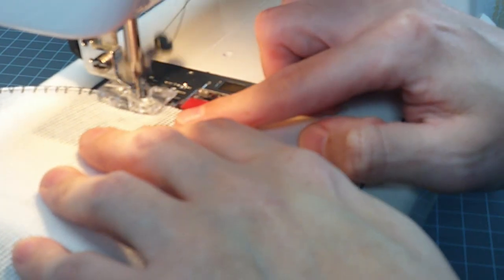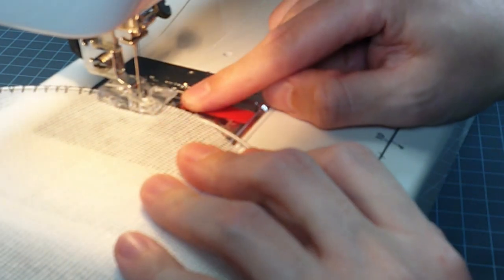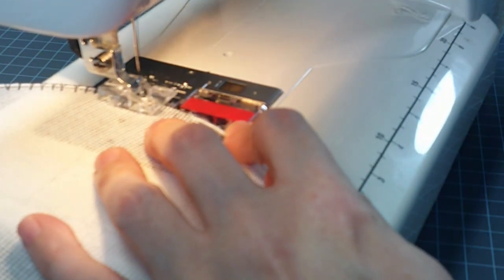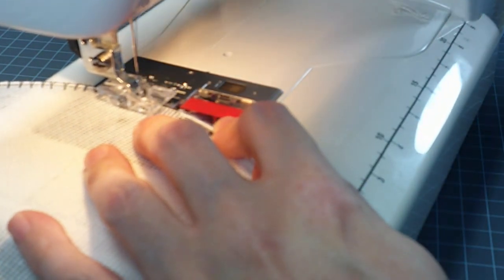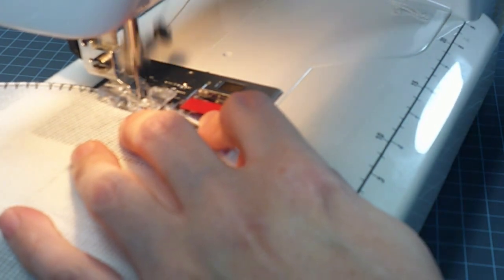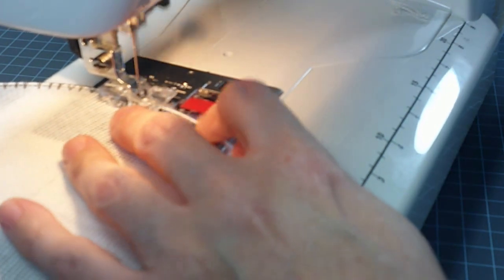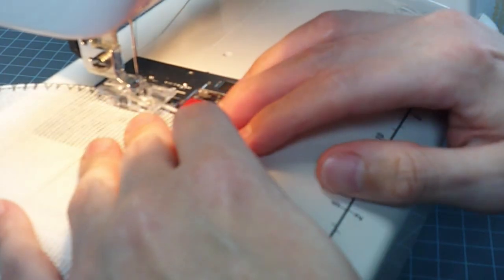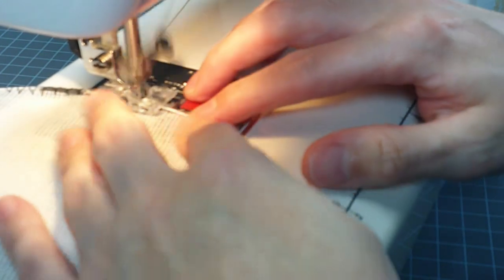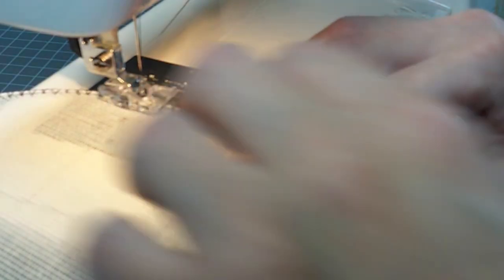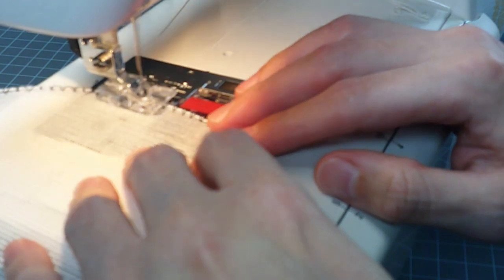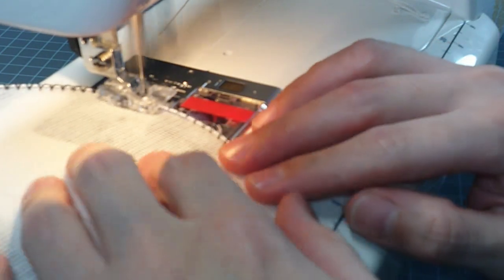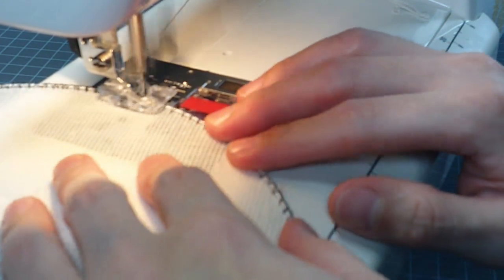Back at the machine, continue to sew around. When you get to the joiner, slow down and hand-turn the wheel to sew over the joiner. When you get back to the beginning, sew over all of the previous stitches again. This just helps to really secure the stitches to the edge of the buckram.